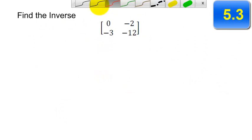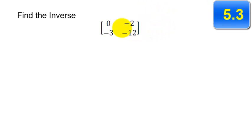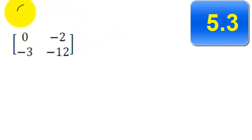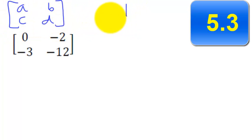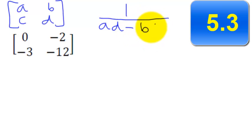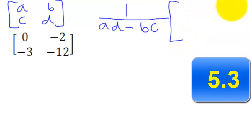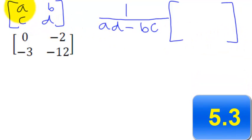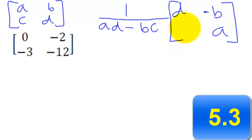Now we're going to find the inverse. As a reminder, for a 2 by 2 matrix with elements A, B, C, D, the inverse is 1 over (AD minus BC) times the rearranged matrix. The formula is: A and D trade places, while B and C stay in position but their signs become opposites. So B becomes negative B, and C becomes negative C.